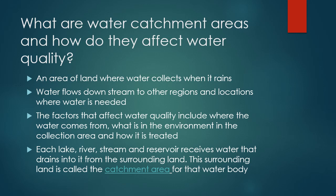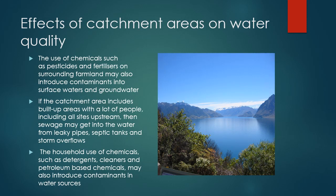How do water catchment areas affect water quality? The environment around a catchment area has an impact on its quality. If the catchment area includes farms — especially cattle grazing to the water's edge — water quality will be affected by sediments being stirred up and by animal feces contaminating the water. The use of chemicals such as pesticides and fertilizers on surrounding farmland may also introduce contaminants into surface water and groundwater. If the catchment area includes built-up areas, sewage may get into the water from leaky pipes, septic tanks, and storm overflows. Household use of chemicals such as detergents, cleaners, and petroleum-based chemicals may also introduce contaminants into water sources.